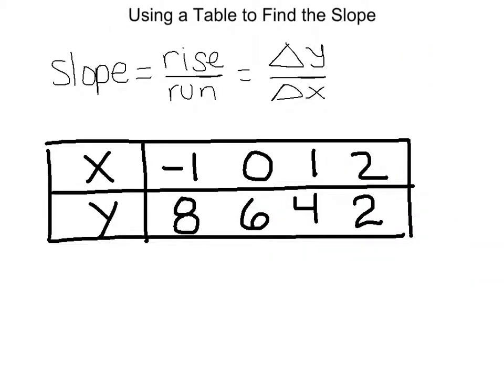So now you know how to find the slope by using two points on a graph. Now how do you find the slope by using a simple table?